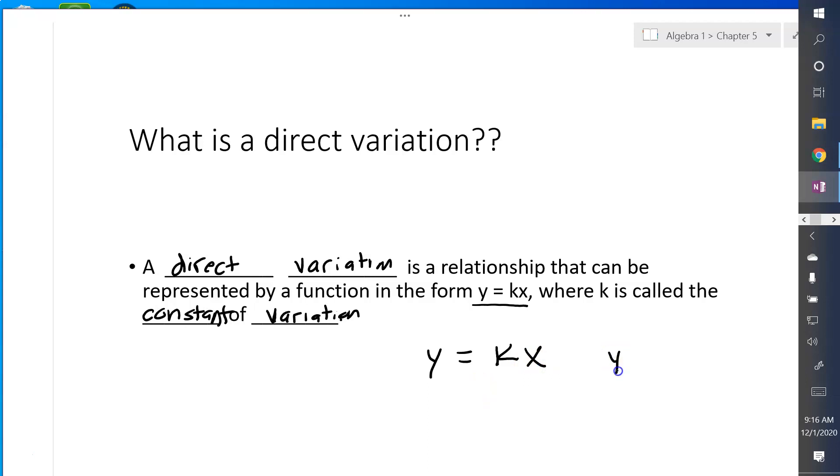But if I said y equals kx plus 5, that would not be. So some number times x is a yes, but if I start adding or subtracting things, then that's a no for direct variation.